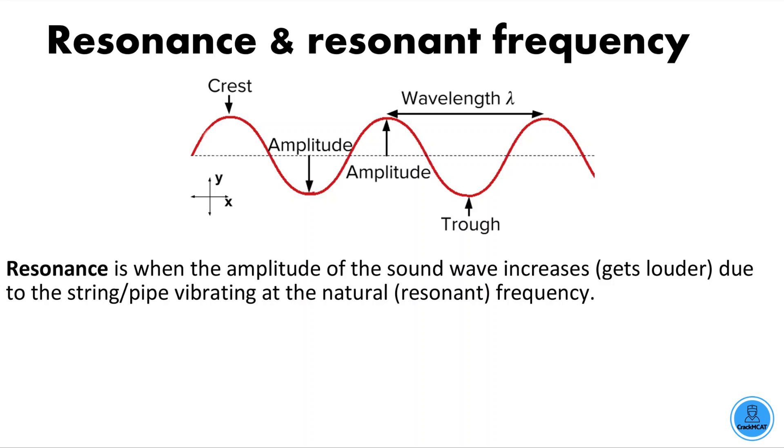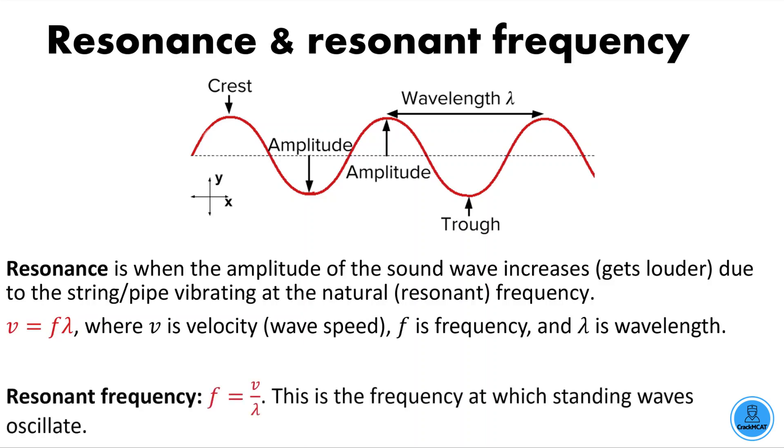a tune at the natural frequency. And in order to find this, we use the equation velocity equals frequency times wavelength. Now what we want is the frequency, so we take the velocity of the sound and divide that by the wavelength.